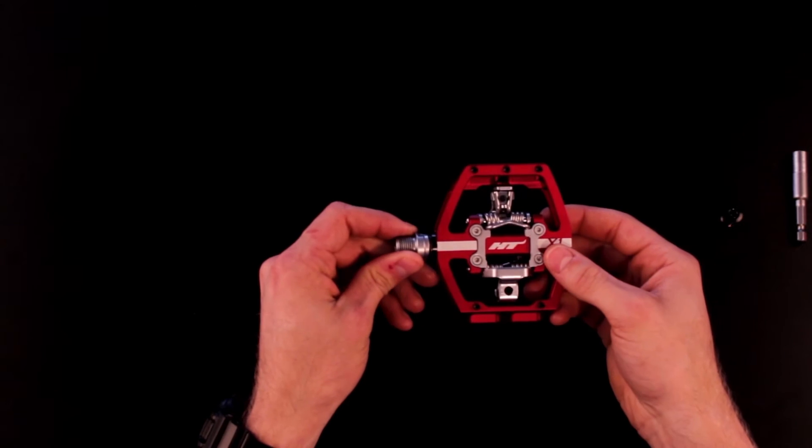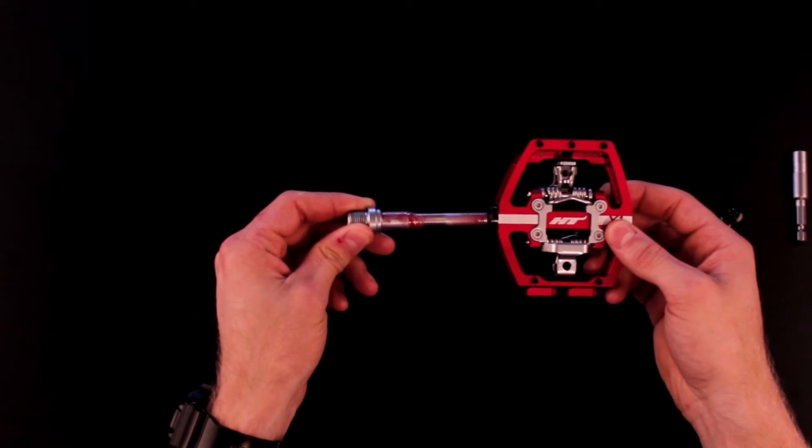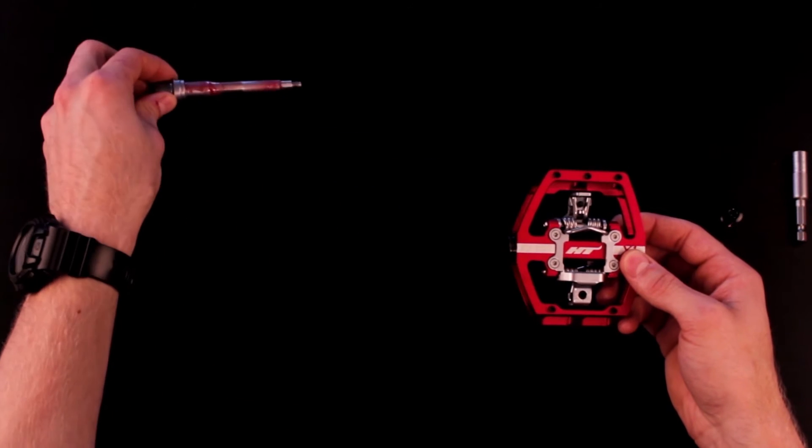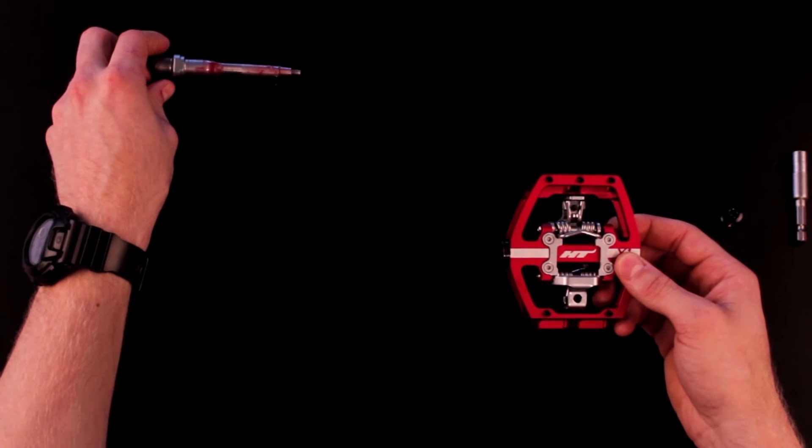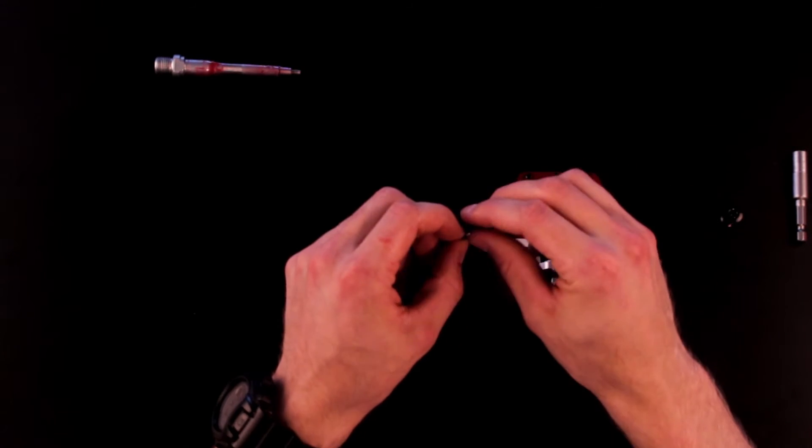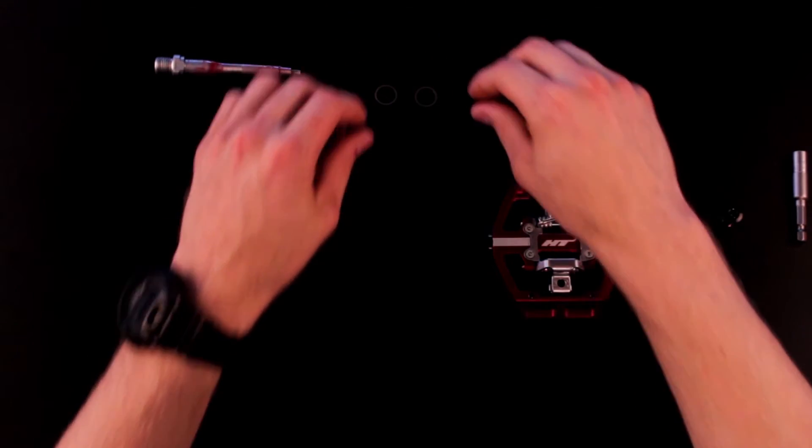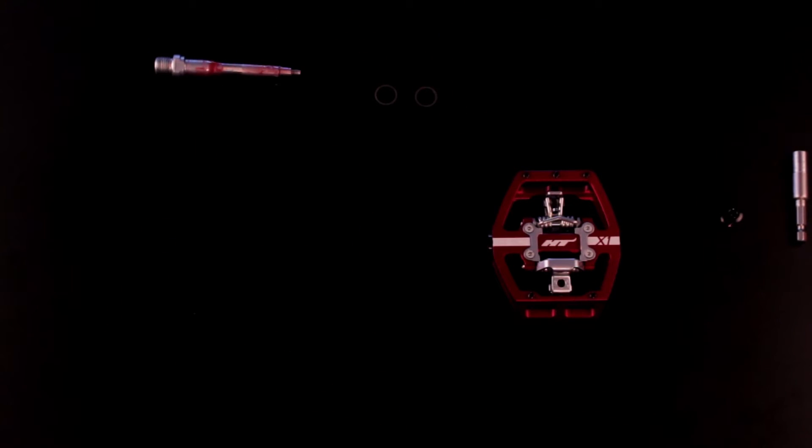The axle should now be free to fully pull out of the pedal, so pull it straight out and make sure to keep your eyes on the two spacers. Here you'll see them attached to the bushing. Keep these in sequential order—there's a small one and a large one. Keep these next to each other to make sure you don't lose them.